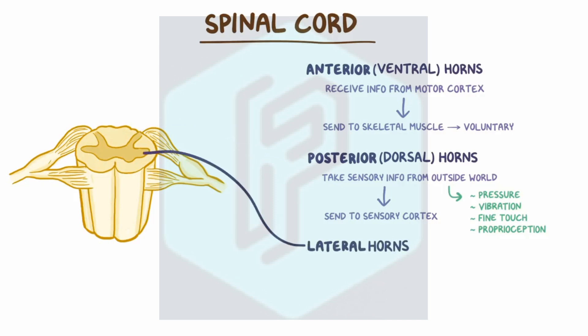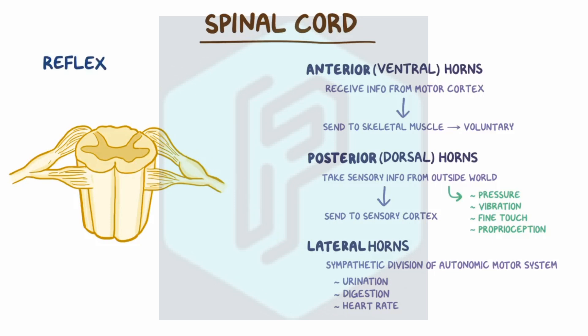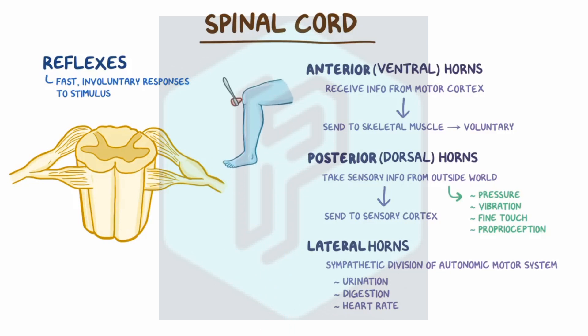Finally, there are the lateral horns, which are mainly involved with the sympathetic division of the autonomic motor system, helping regulate processes like urination, digestion, and heart rate. The spinal cord is also responsible for coordinating reflexes — fast, involuntary responses to a stimulus, like getting banged on the knee with a hammer. This is possible because some sensory neurons synapse in the spinal cord instead of going up to the brain, and shorter distances mean faster signals.